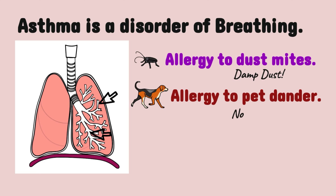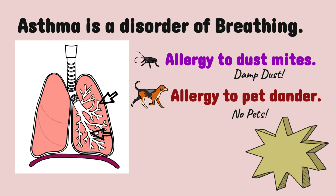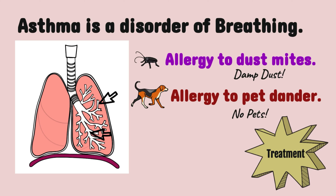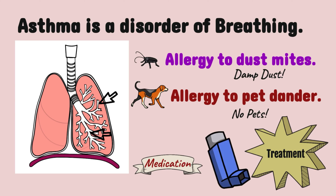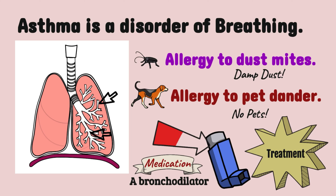What can you do about asthma? You can avoid the allergen if you know what it is — damp dust or don't have pets — but ultimately you mostly still need treatment. This involves a medication that makes the bronchioles dilate, a type of drug known as a bronchodilator, usually given with an inhaler, which gives an immediate effective response.